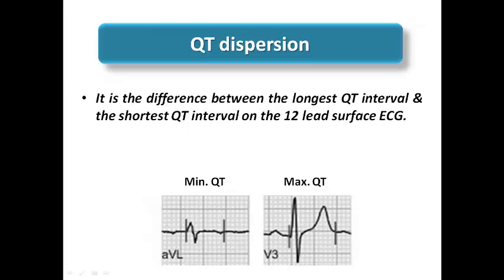QT dispersion is a terminology found in much of the literature and clinical trials. It describes the difference between the longest QT interval and the shortest QT interval on the same 12-lead surface ECG. For example, the minimal QT interval may be in aVL while the maximum QT interval is in V3. The longer the QT dispersion — that is, the larger the difference — the more the risk of developing torsades de pointes.